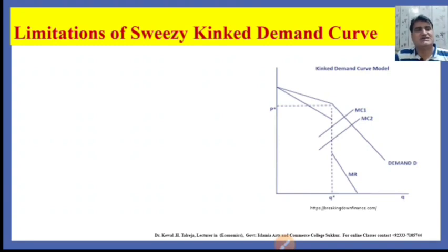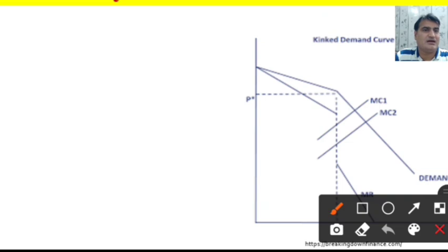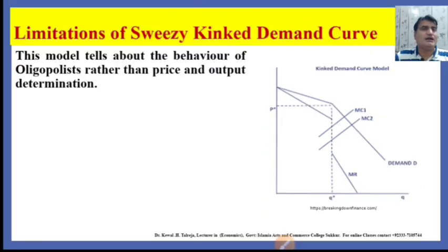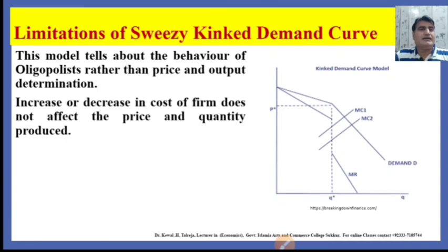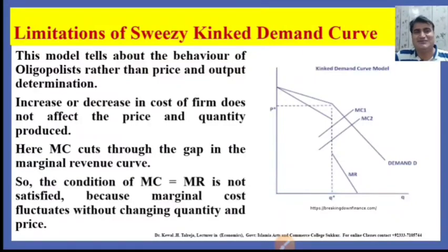Now we discuss the limitations of the Sweezy Kinked demand curve. An increase in price is not followed by competitors, whereas a decrease in price is followed. Suppose cost increases or decreases from MC1 to MC2 or from MC2 to MC1 — the price and output remain the same. This model tells us about the behavior of oligopolists rather than price and output determination. An increase or decrease in the cost of the firm does not affect the price or quantity produced. The condition of marginal cost equal to marginal revenue is not satisfied because marginal cost fluctuates without changing quantity and price.